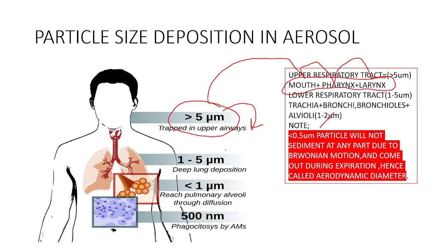If the particle size is 1 to 5 micrometers, those particles can be distributed into the lower respiratory tract — that is, the trachea, bronchi, and bronchioles. Particles of 1 to 5 micrometers get deposited in this region.